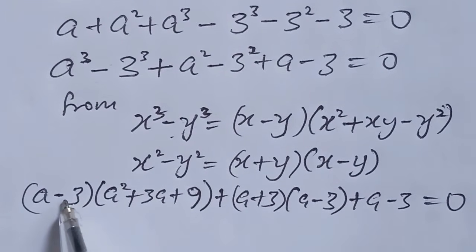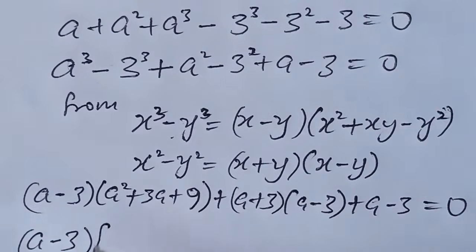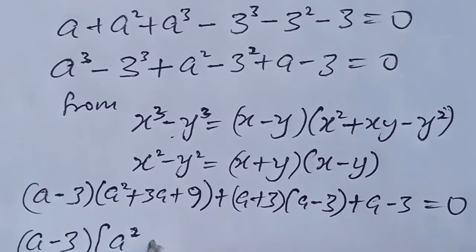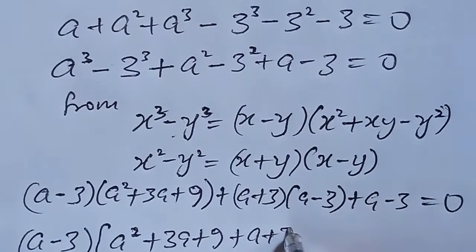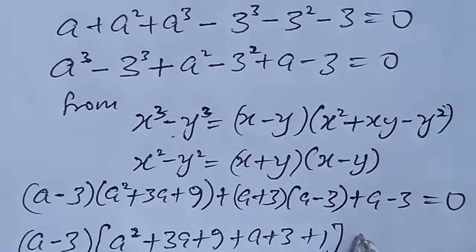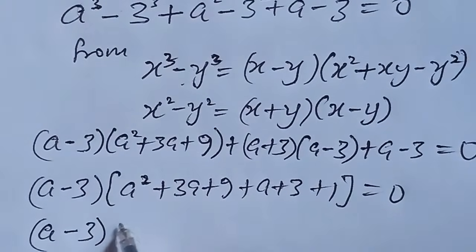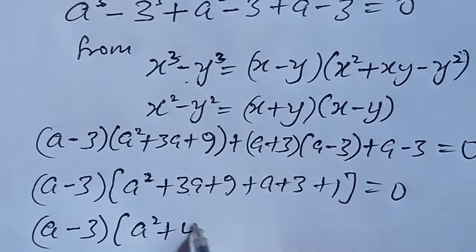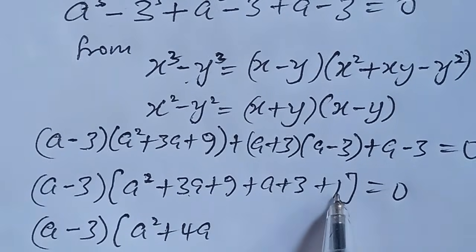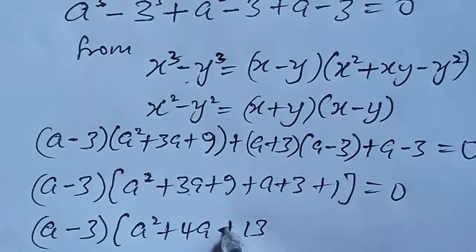So from here we factor out a minus 3, which is common to both terms. Now let's simplify what we have here: 3a plus a. We have a squared plus 4a. And 9 plus 3 plus 1 gives us 13.